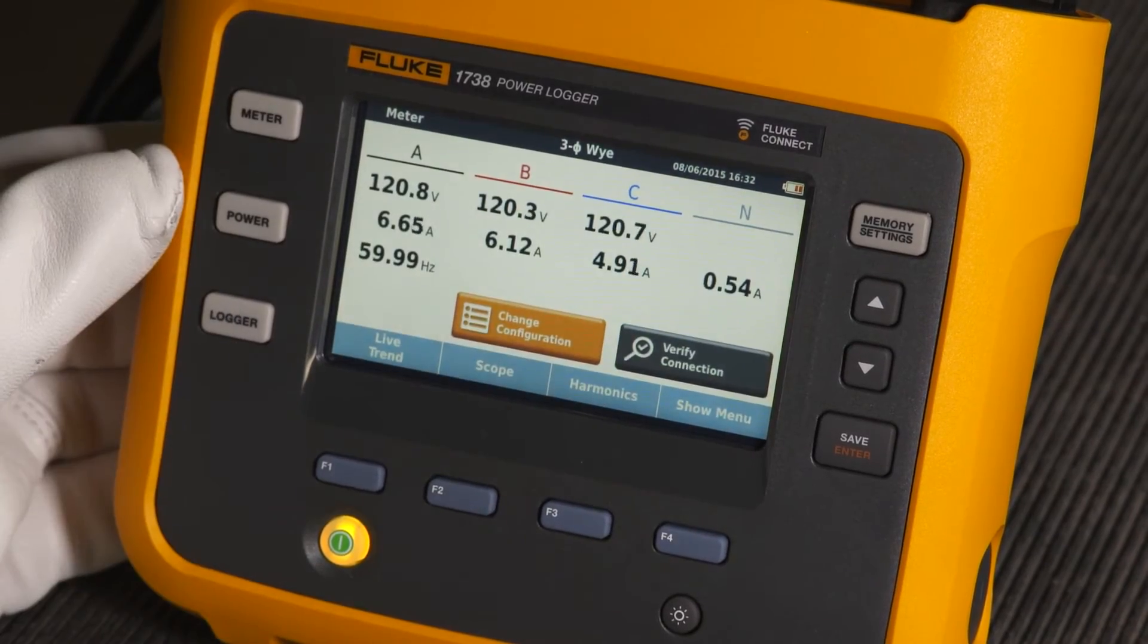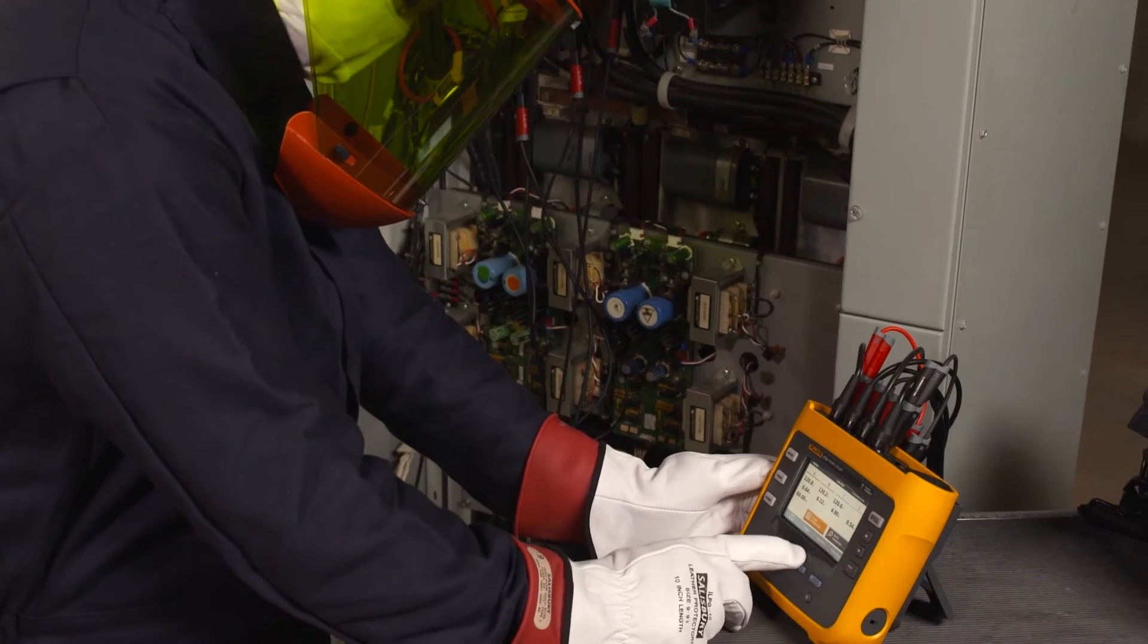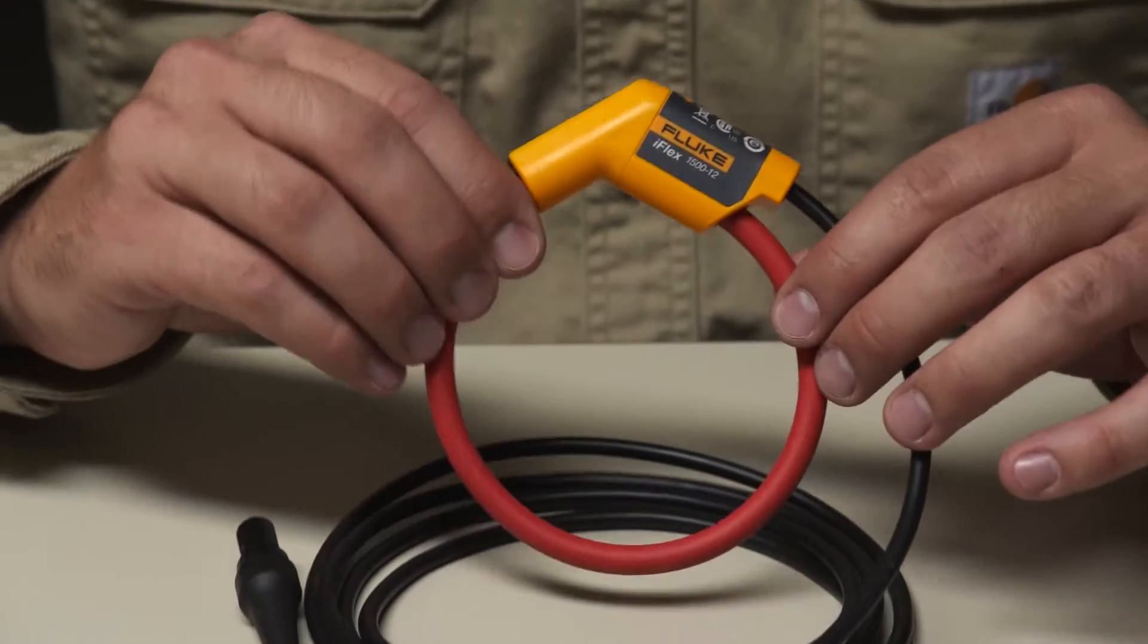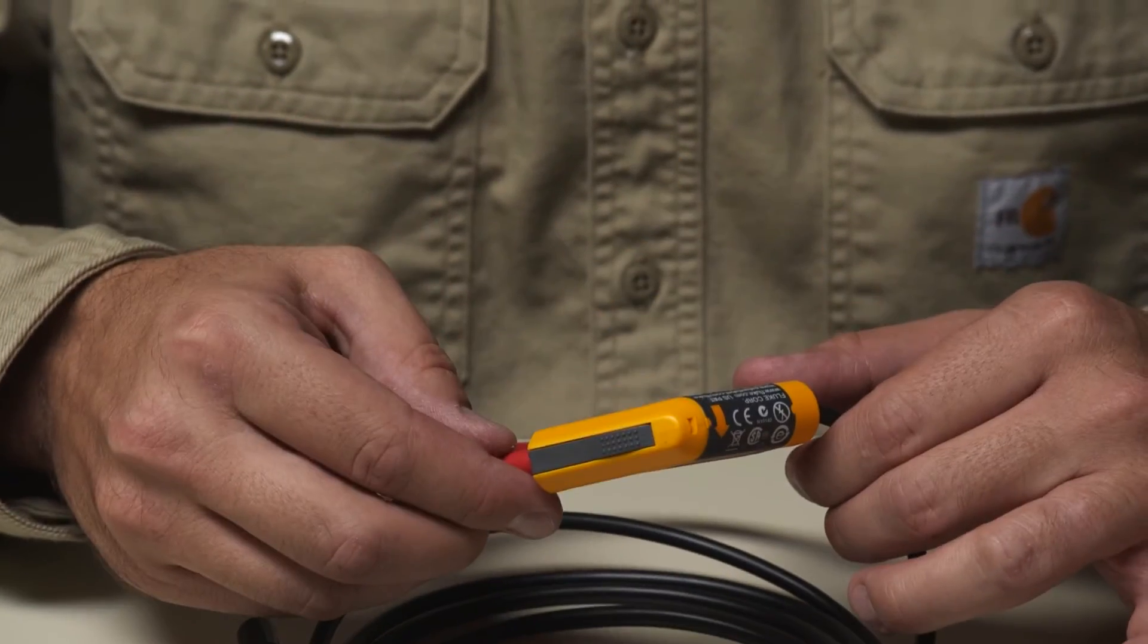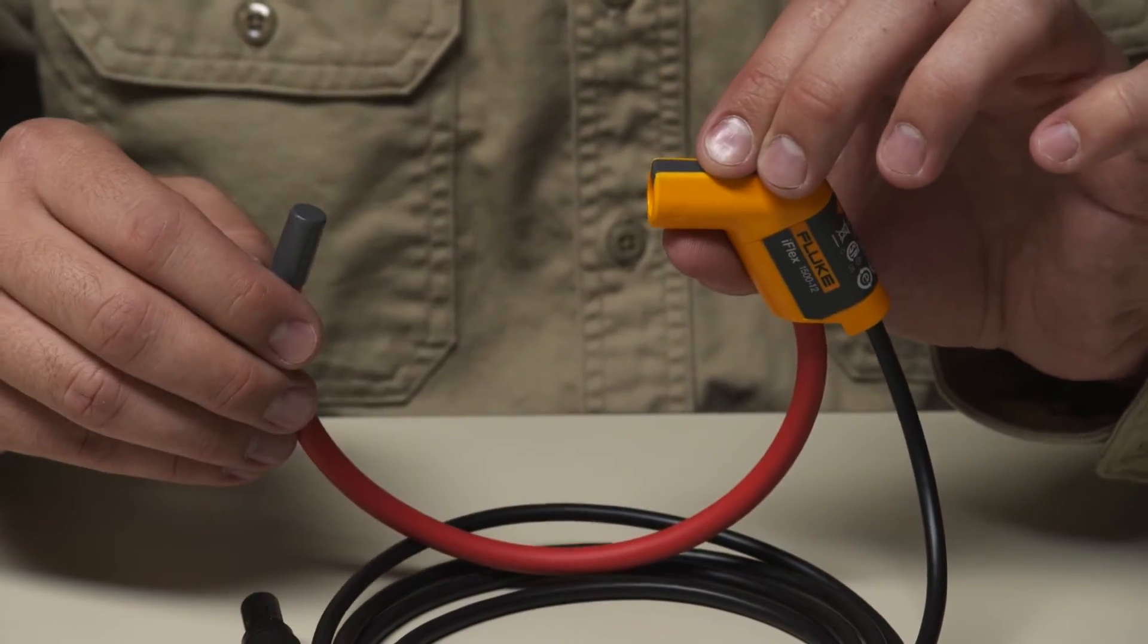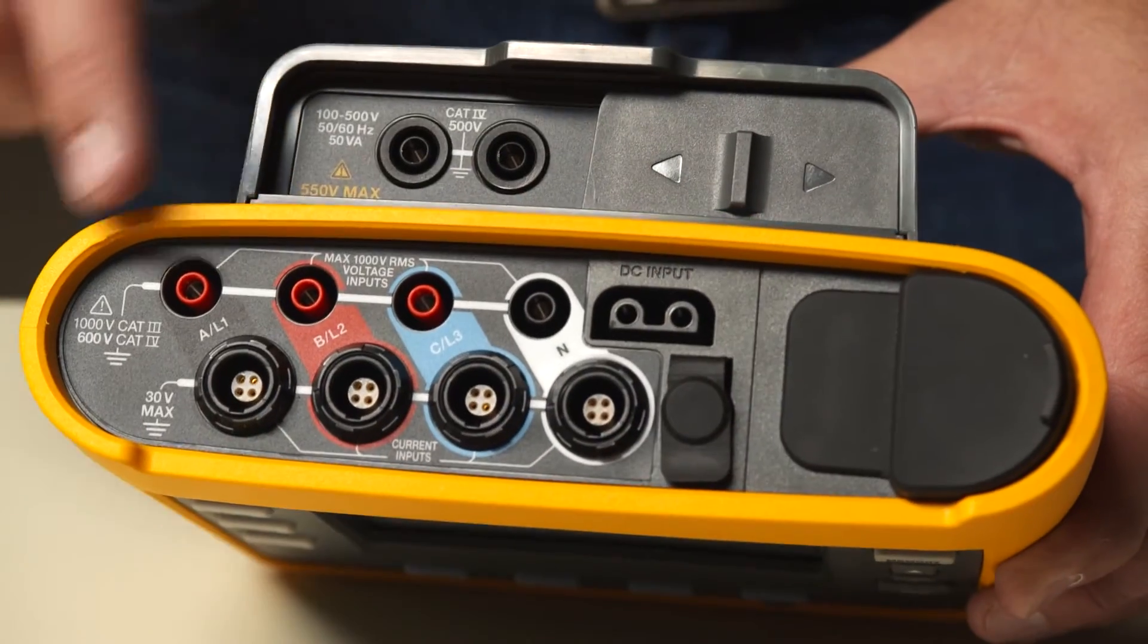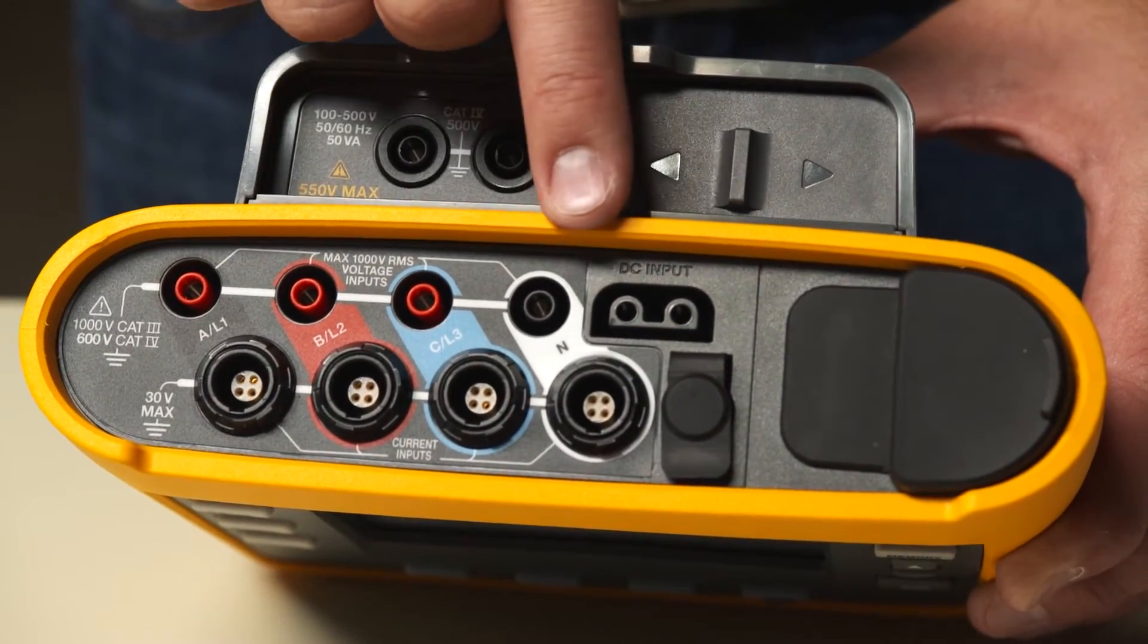the Fluke 1736 and 1738 can automatically capture and log over 500 power quality parameters. The standard products come with four flexible current probes for measurement of three-phase currents and a neutral current, which enables users to troubleshoot and benchmark the state of health of their electrical infrastructure.